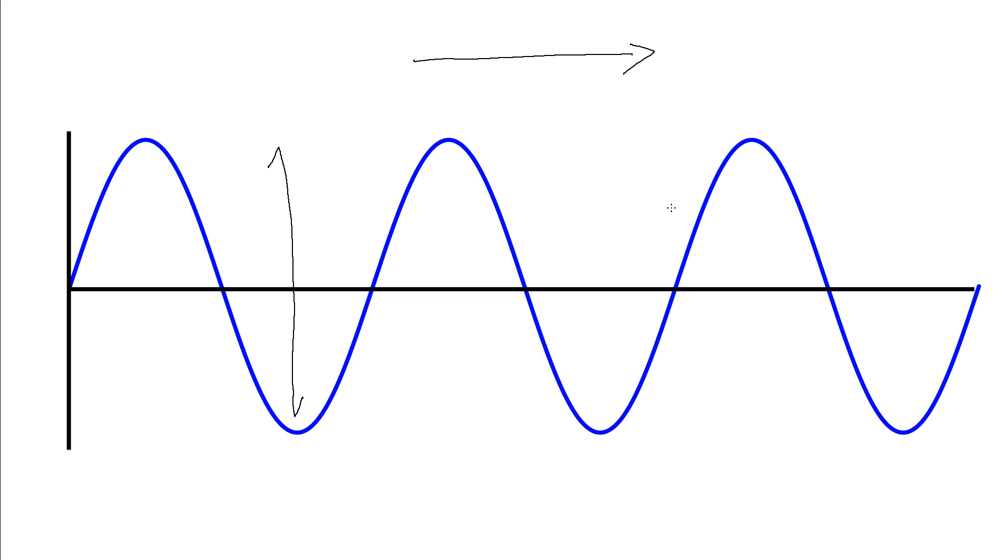So in this case this is what we call a transverse wave because the direction of the oscillation is perpendicular, it's at 90 degrees to the direction of the motion.